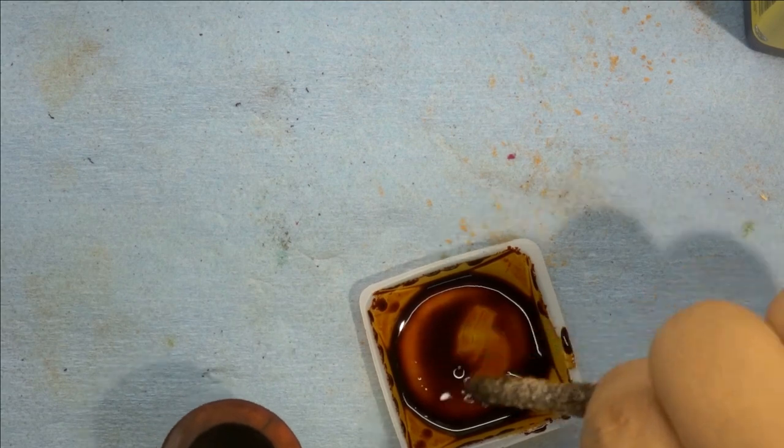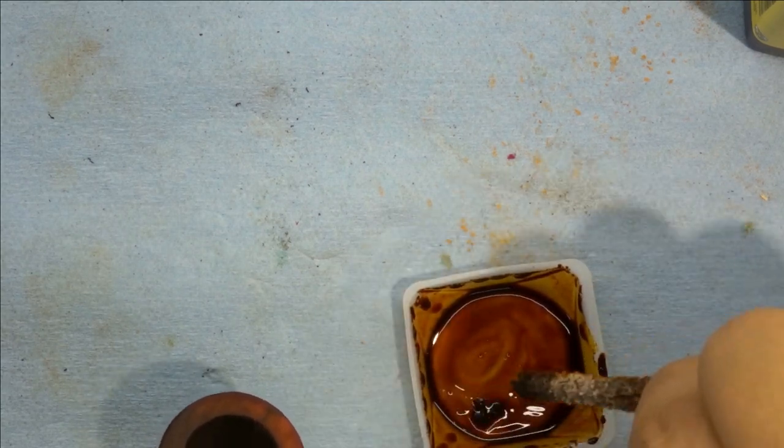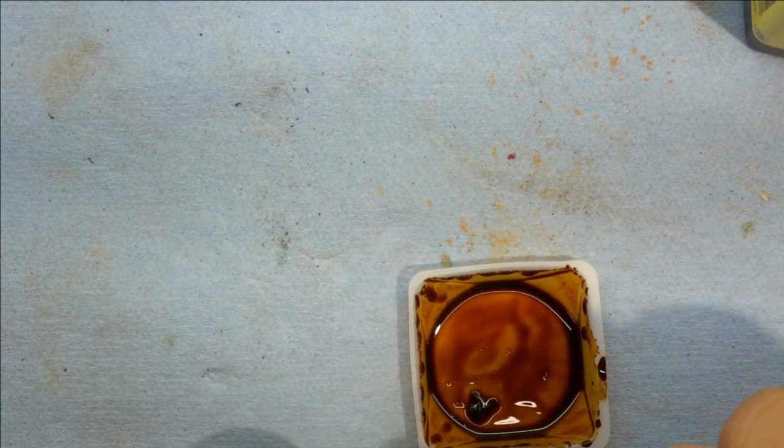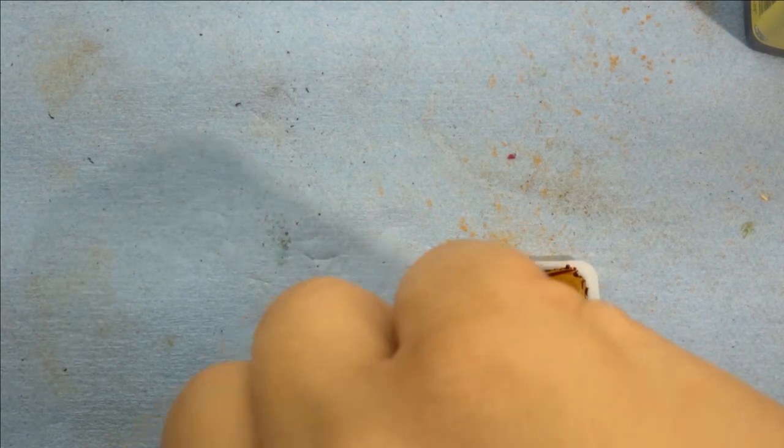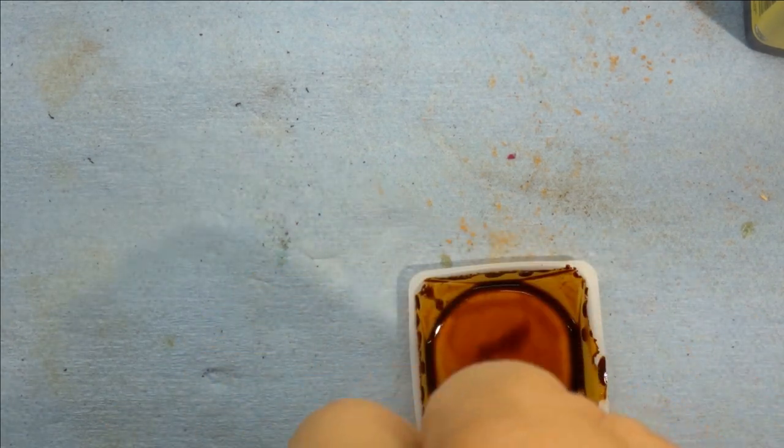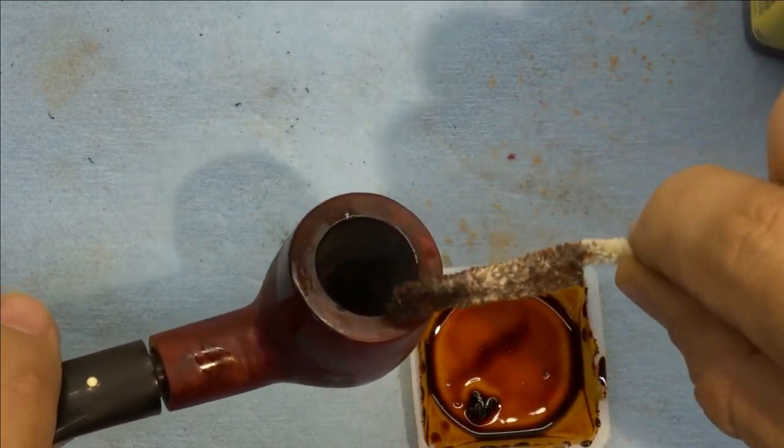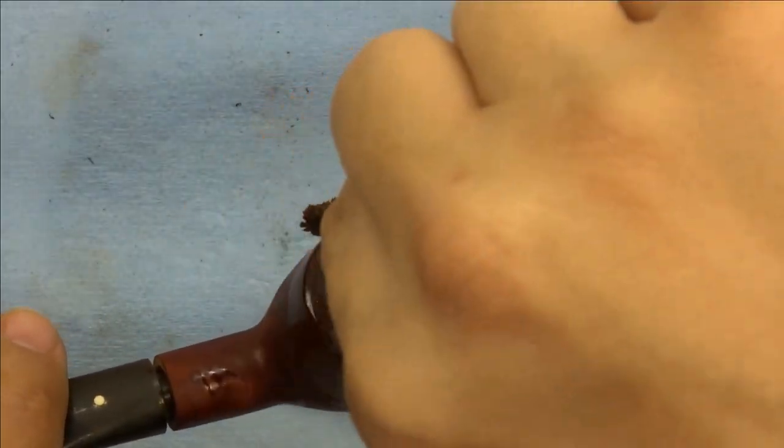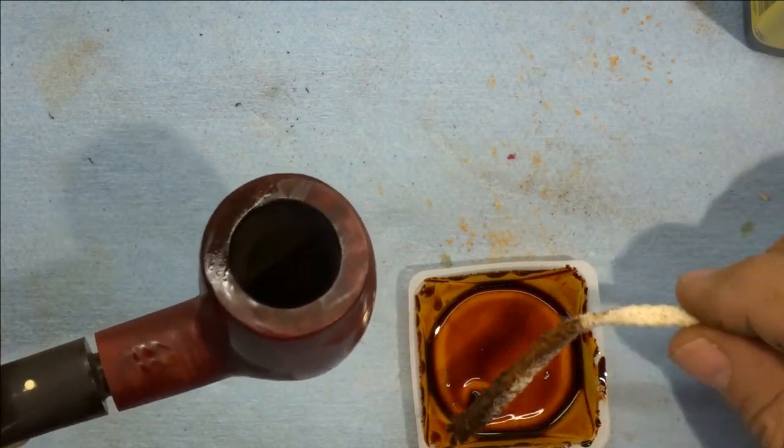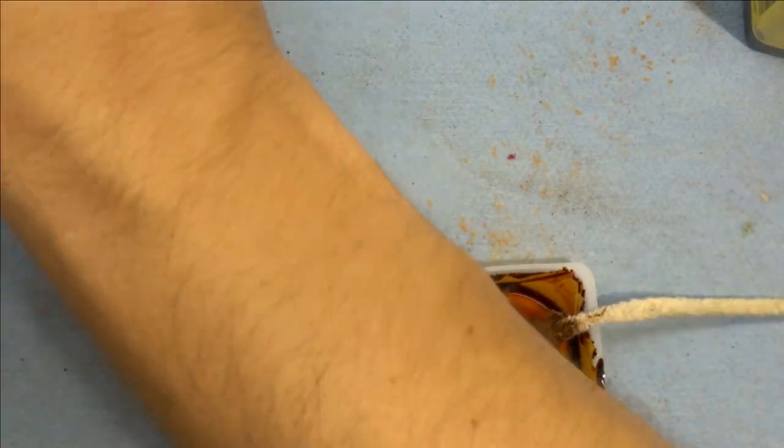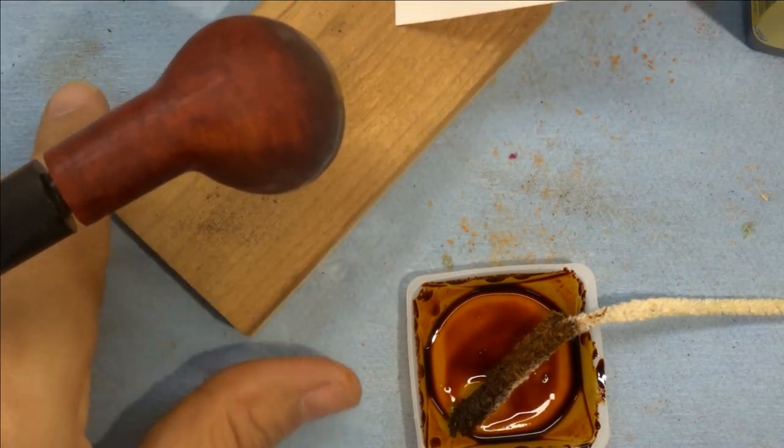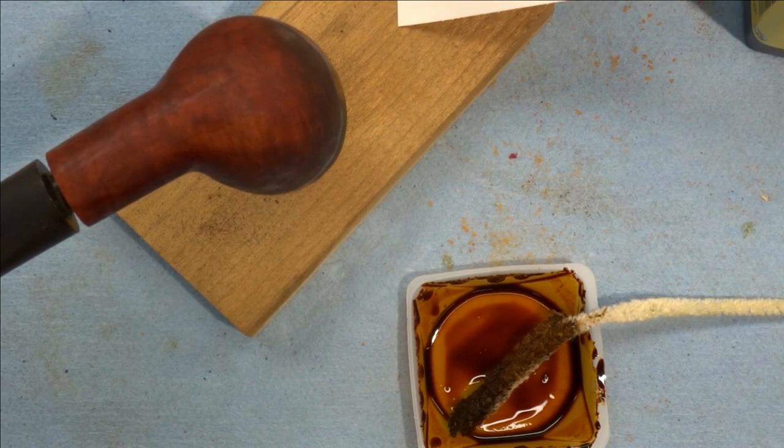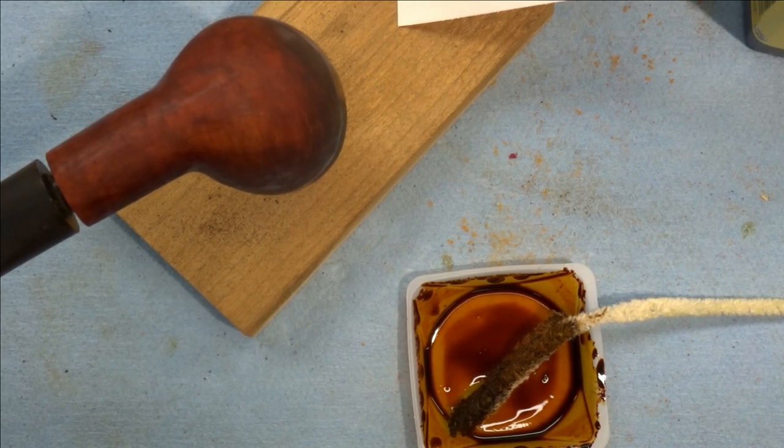I'm going to just do one more around the rim. I have no idea what that chunk of something is in my stain - might have come off the pipe cleaner. Just making sure everything is blended in. We will leave that to sit for a while and then come back to sand and buff and do it again.